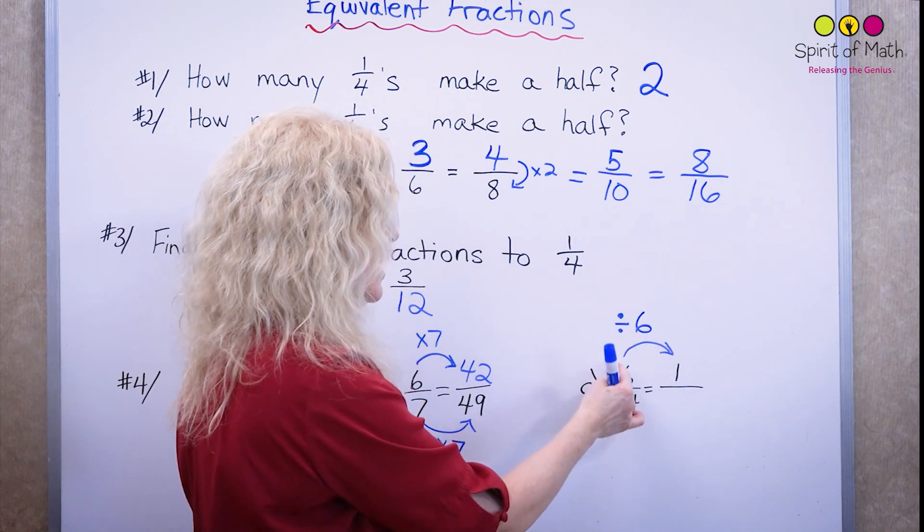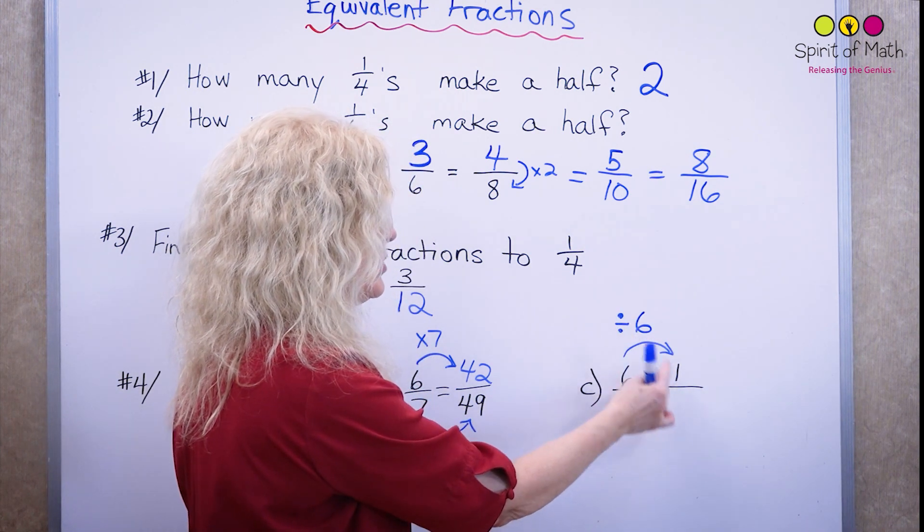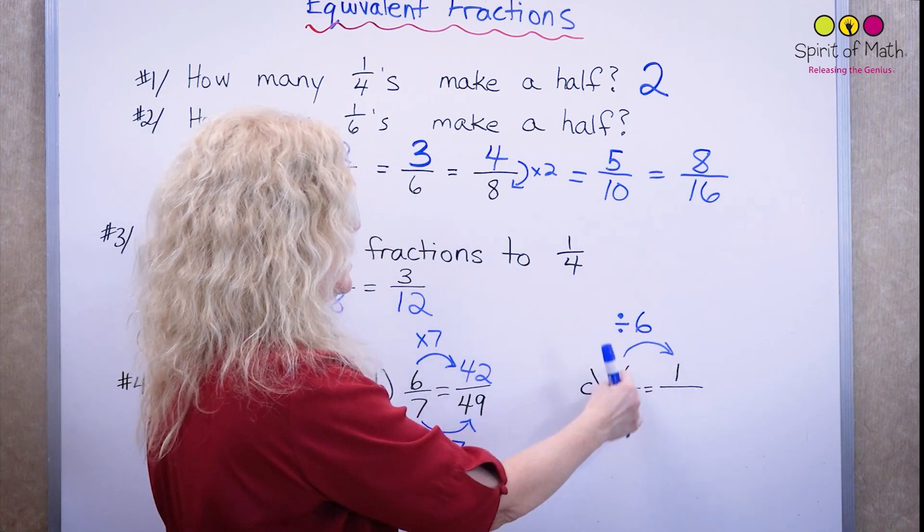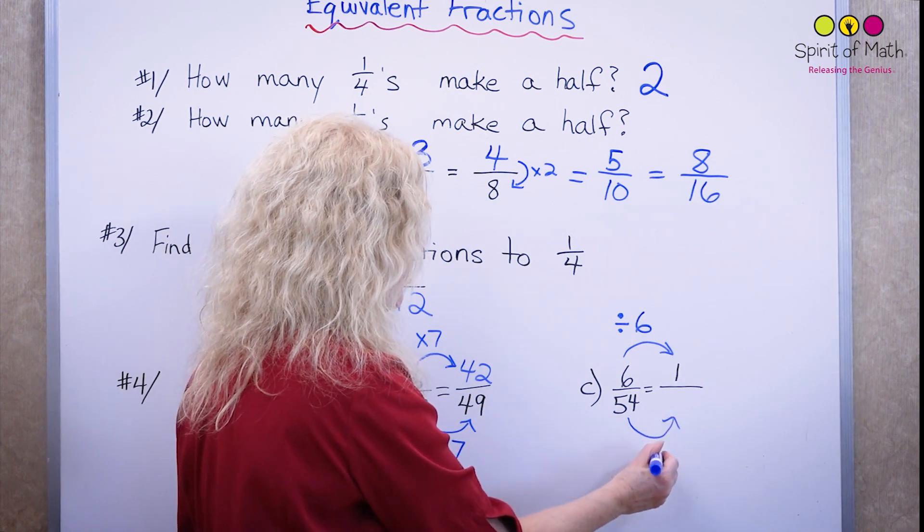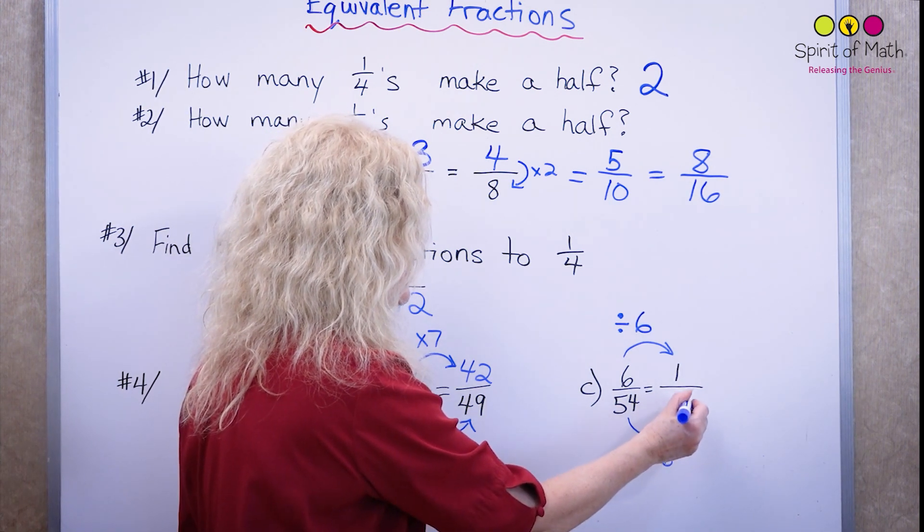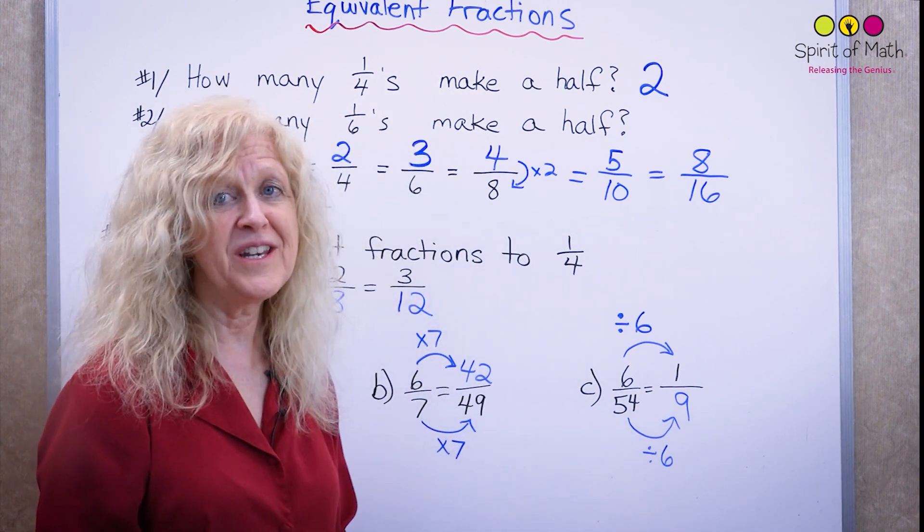If you went backwards, one times six equals six, if you're wondering. So we're going this way. Six divided by six is one. So fifty-four divided by six is equal to nine. And that's one-ninth. So that's how you do equivalent fractions.